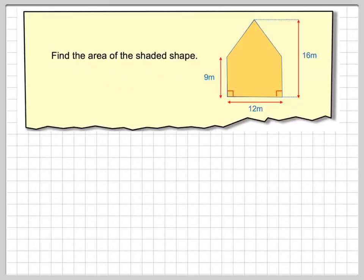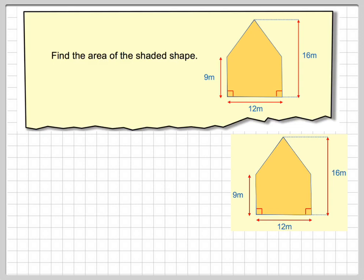Find the area of the shaded shape. So what we've got is this shape here and we have to find its area. In order to do that we're going to split it up into two separate shapes.